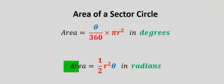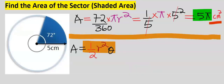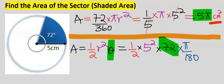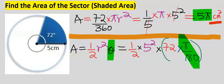Next, let's use the radians formula to verify we get the same answer. Write out the area formula in radians and substitute. However, 72 is in degrees, not radians. To convert degrees to radians, multiply the degrees by π/180. With this conversion, we can proceed to simplify.